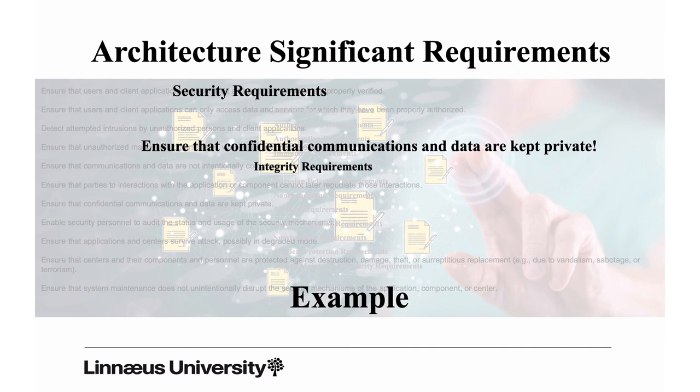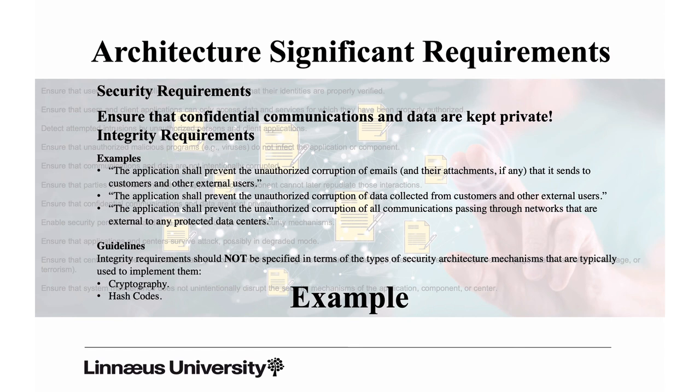If we go for integrity requirements, there are a number of examples. What is important — you should not specify integrity requirements in terms of what architecture mechanism you use. For instance, don't specify 'ensure that confidential communications and data are kept private using cryptography.' Avoid writing requirements at that level. Avoid implementation details. This is requirement specification 101: stay away from the how. Requirements are about what.